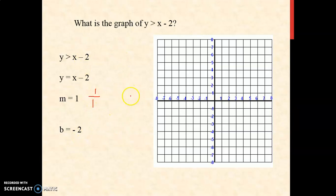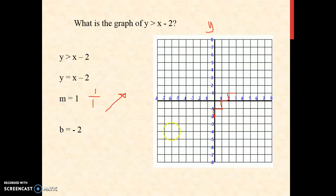In order to graph this, we need to plot your y-intercept first. Your y-intercept is always found along the y-axis, so we have negative 2 here. Your slope is positive, therefore it is expected that the line rises to the right. Your slope is 1, meaning 1 rise, 1 run to the right. Since we're using the greater than symbol, we're going to use a dashed line.